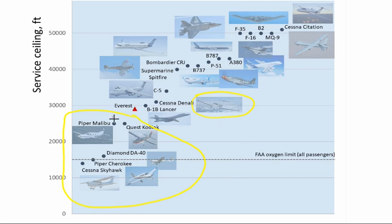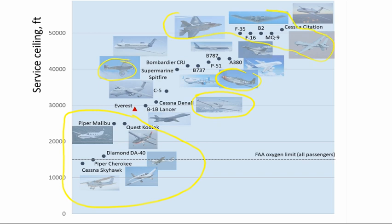For reference, Mount Everest is about 29,000 feet. Around that altitude we have large cargo aircraft such as the C-5, and the B-1 Lancer bomber. Around 43,000–45,000 feet we have several World War II fighters like the P-51 and Spitfire, and also commercial aircraft ranging from small regional jets to long-range transports such as the 787 or A380. A bit higher around 50,000 feet are military aircraft such as the F-35, F-16, MQ-9, and B-2 bomber, as well as several business jets.